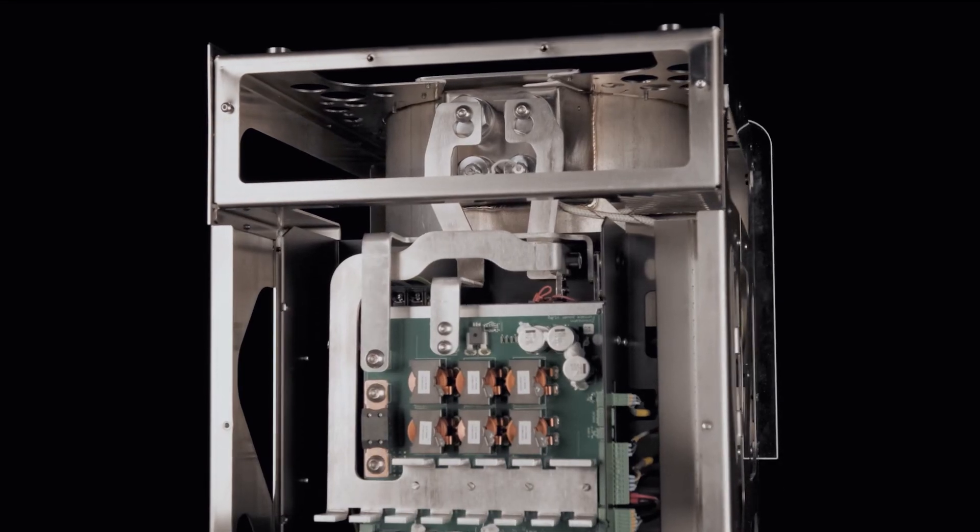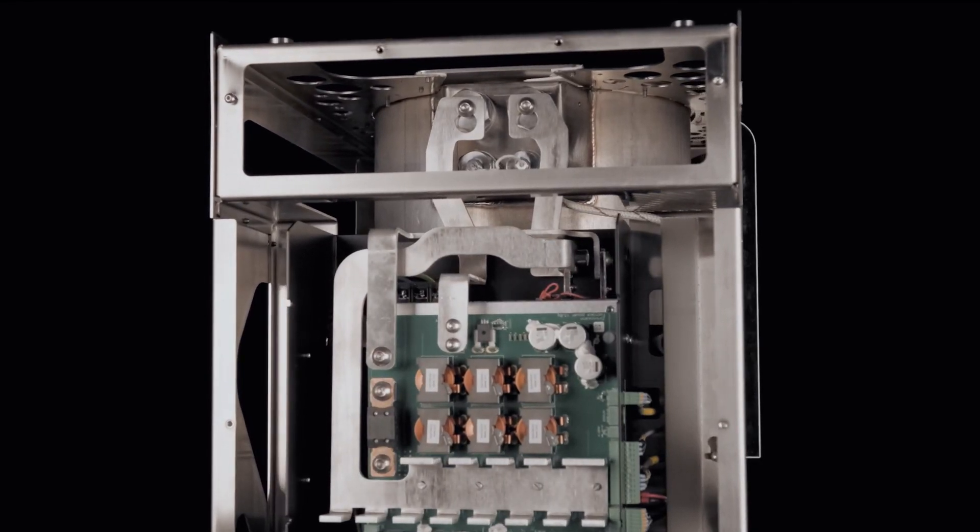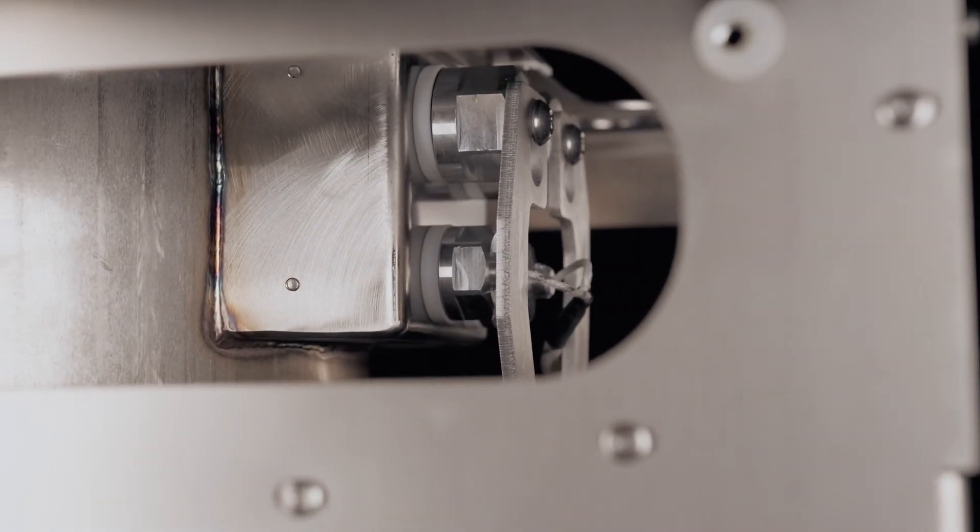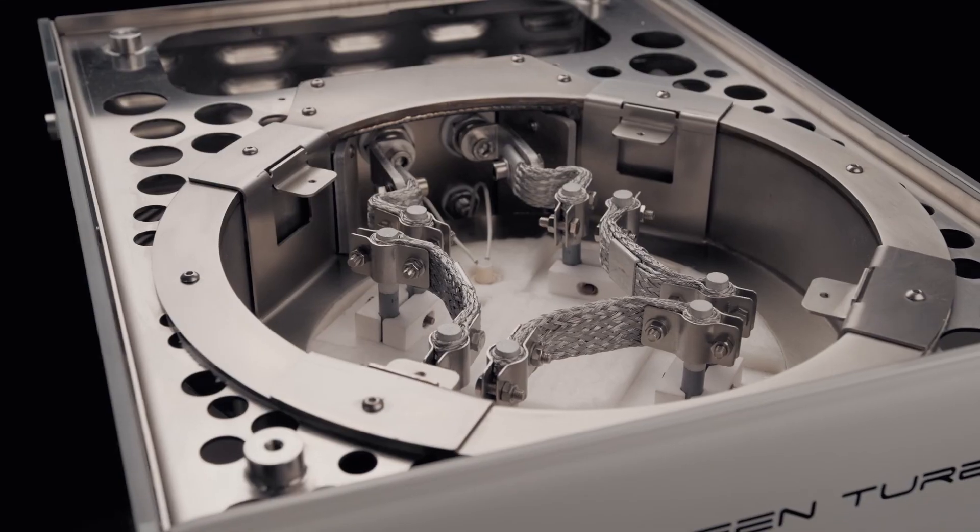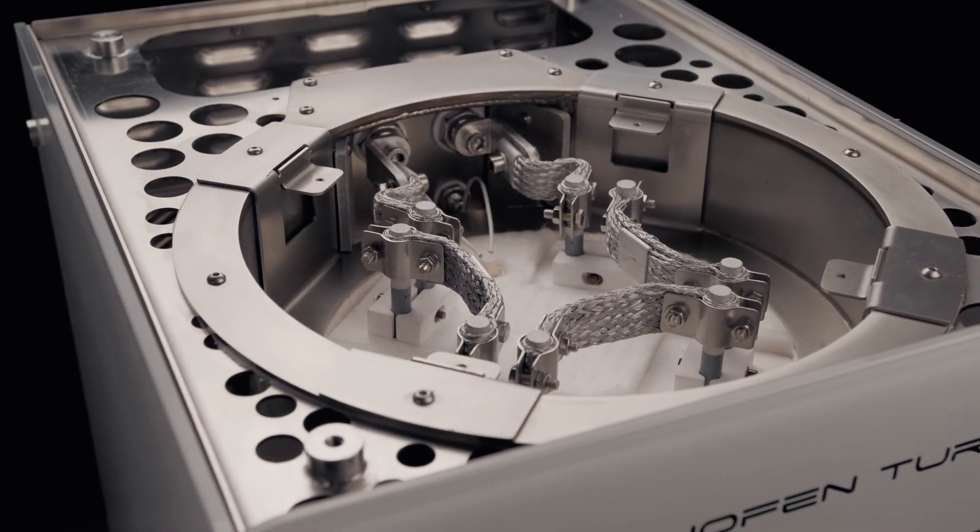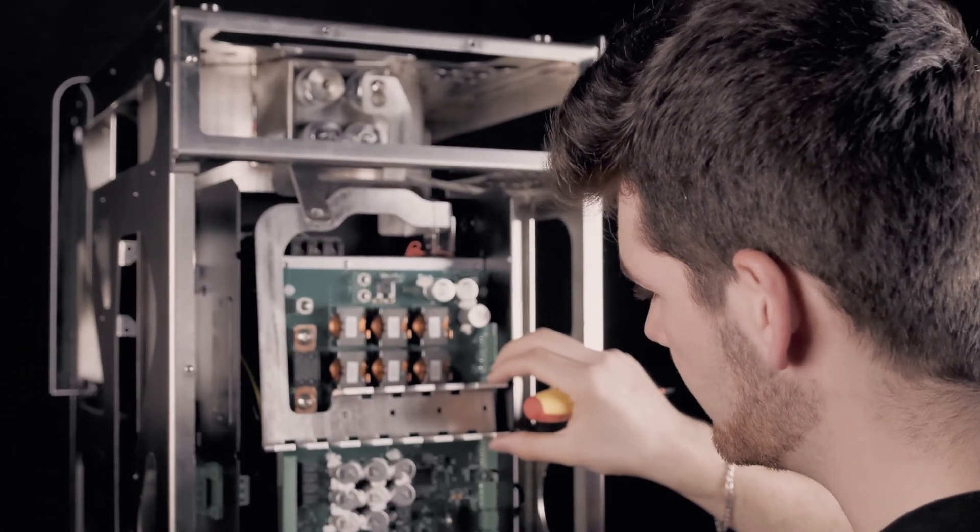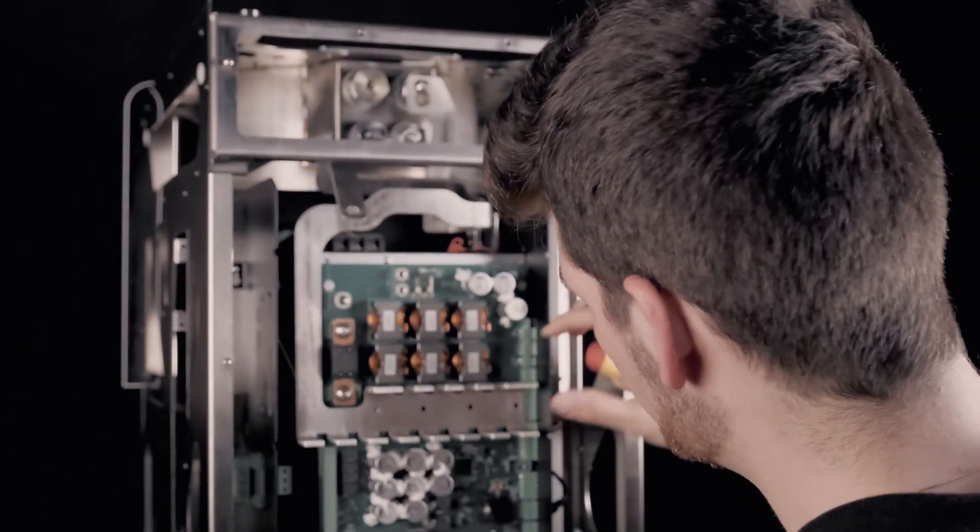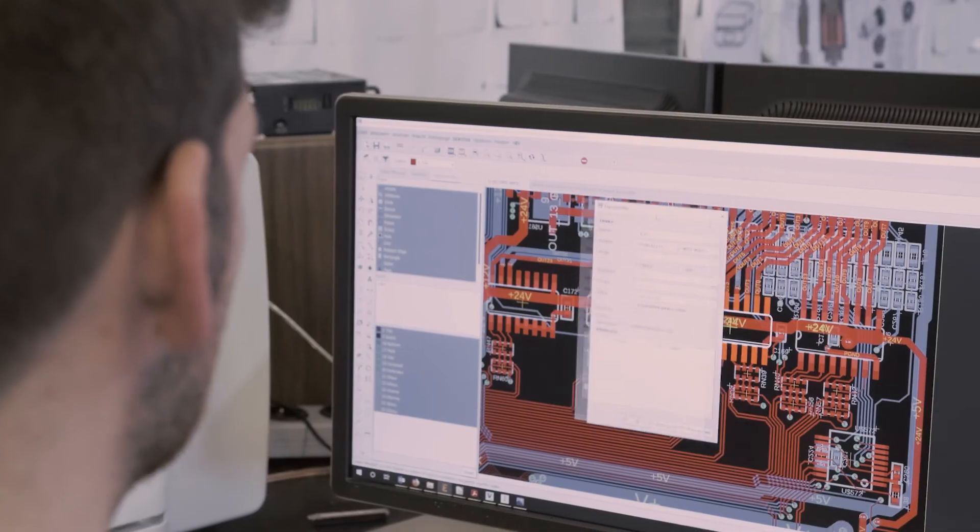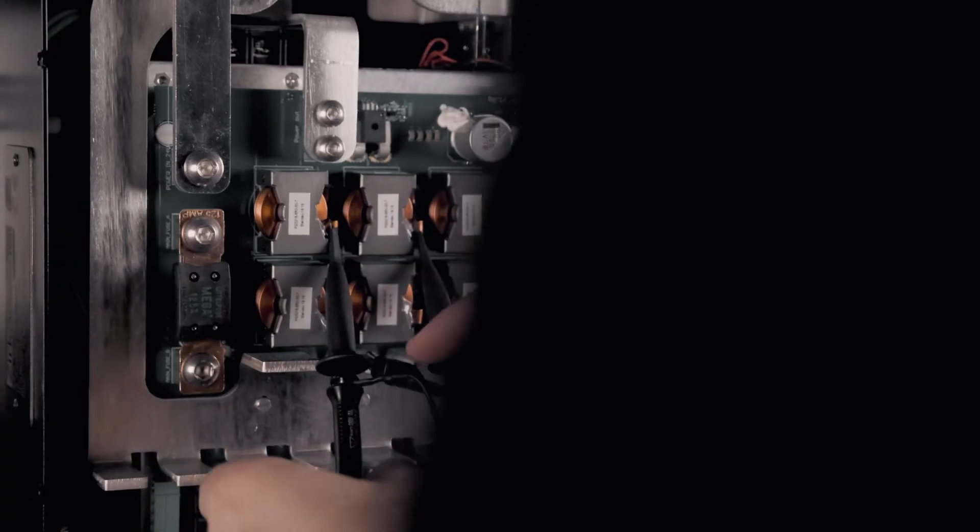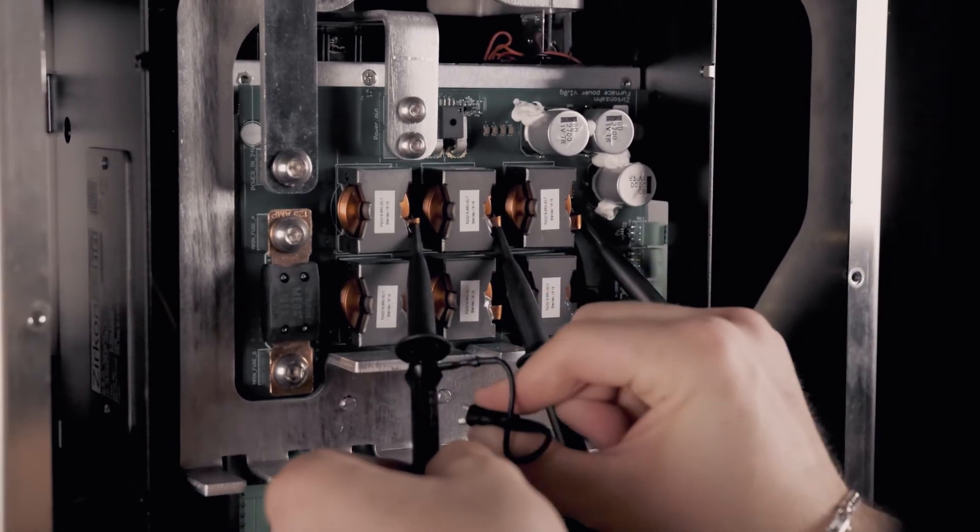Zirkonzahn Turbo proves once again our attention to detail and our constant search for perfection and innovation. The furnace consists of a robust stainless steel frame with specific aluminum electrical conductors which connect the electronic components to each heating element. We have also optimized the length and cross-sectional areas of the electrical conductors by designing them specifically for our furnace in order to reach efficient and excellent current conduction.